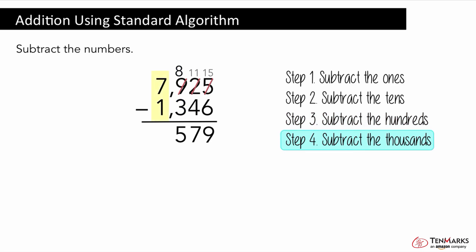Now let's look at the thousands. Seven thousands minus one thousand equals six thousands. So there are six thousands.